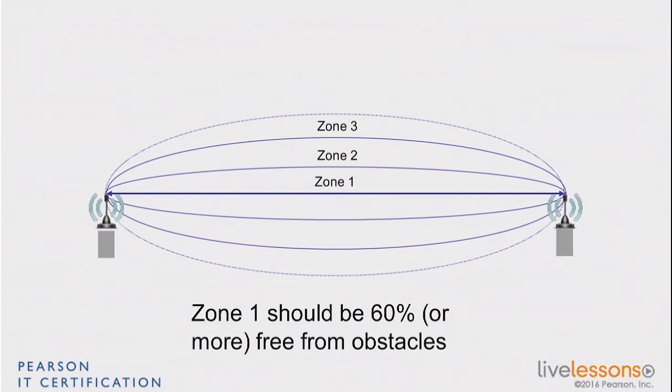But for CCNA, remember, zone 1 is important, and 60% free from obstacles is a requirement for quality signal outdoor. Indoor, it doesn't matter too much.